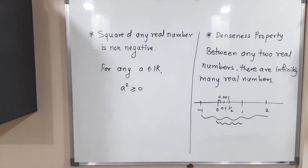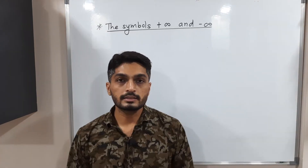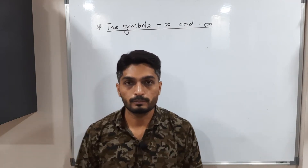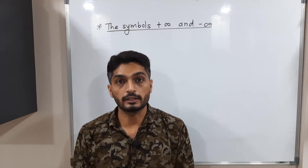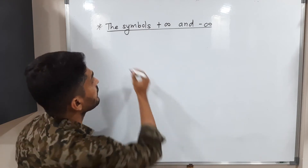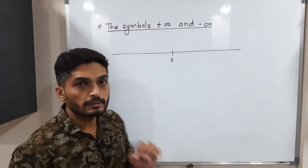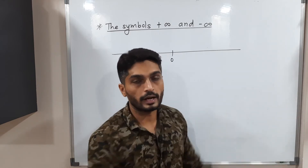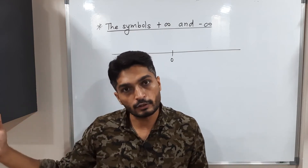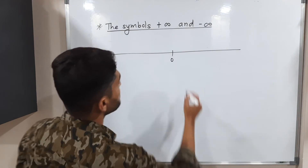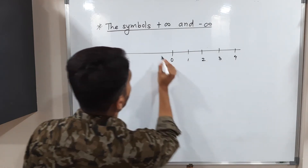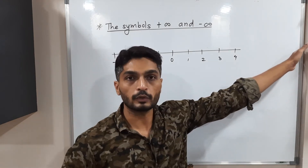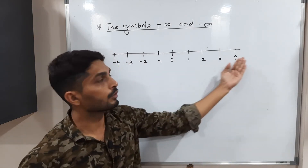Now let's discuss the concept of positive infinity and negative infinity. You know the real number line — we place zero in the middle, positive numbers to the right (1, 2, 3, 4...) and negative numbers to the left (−1, −2, −3, −4...). My whiteboard finishes here, but that doesn't mean the numbers stop — you can go further.